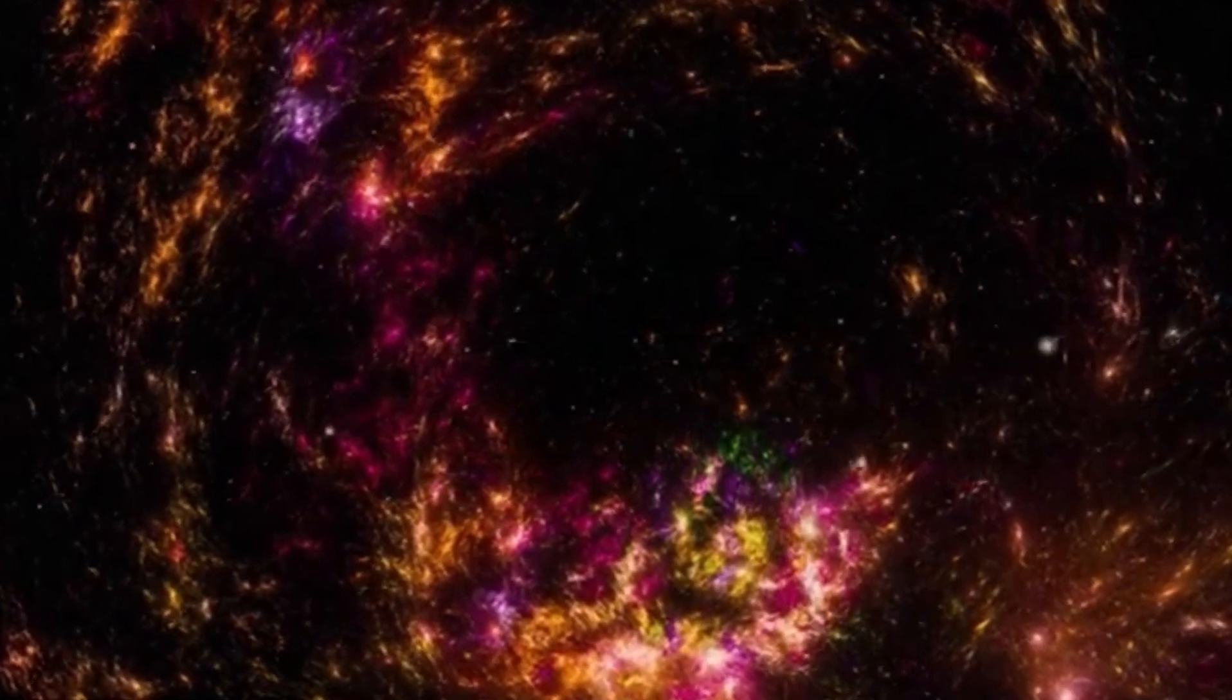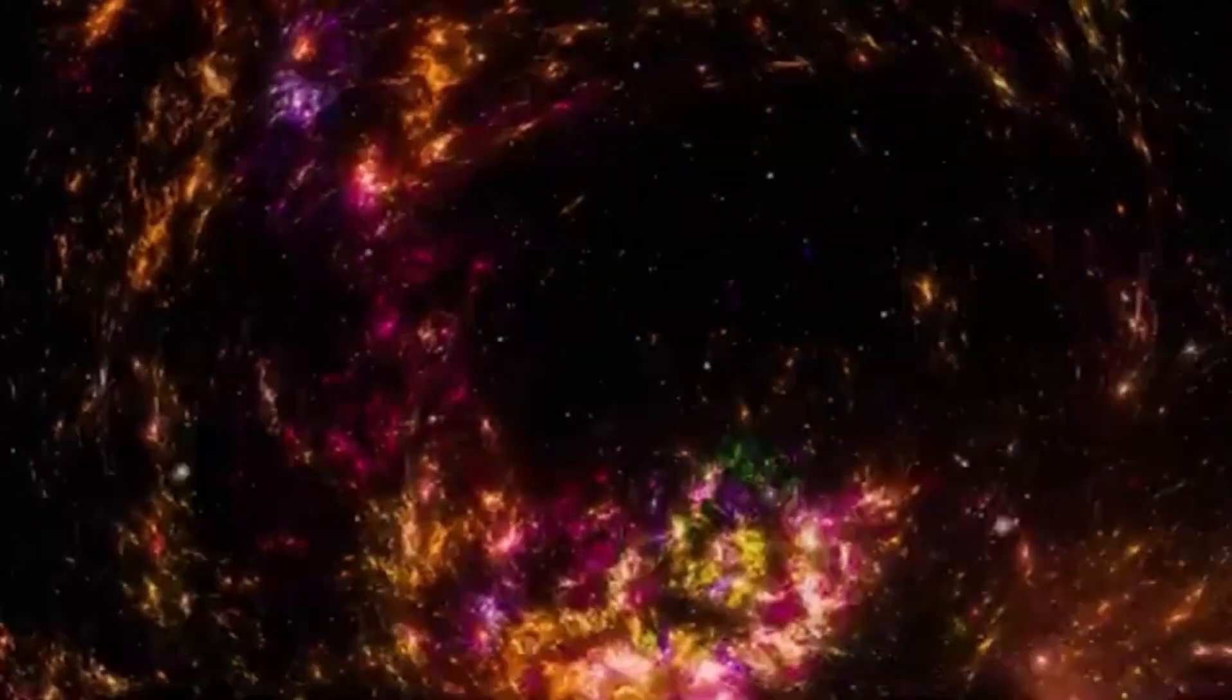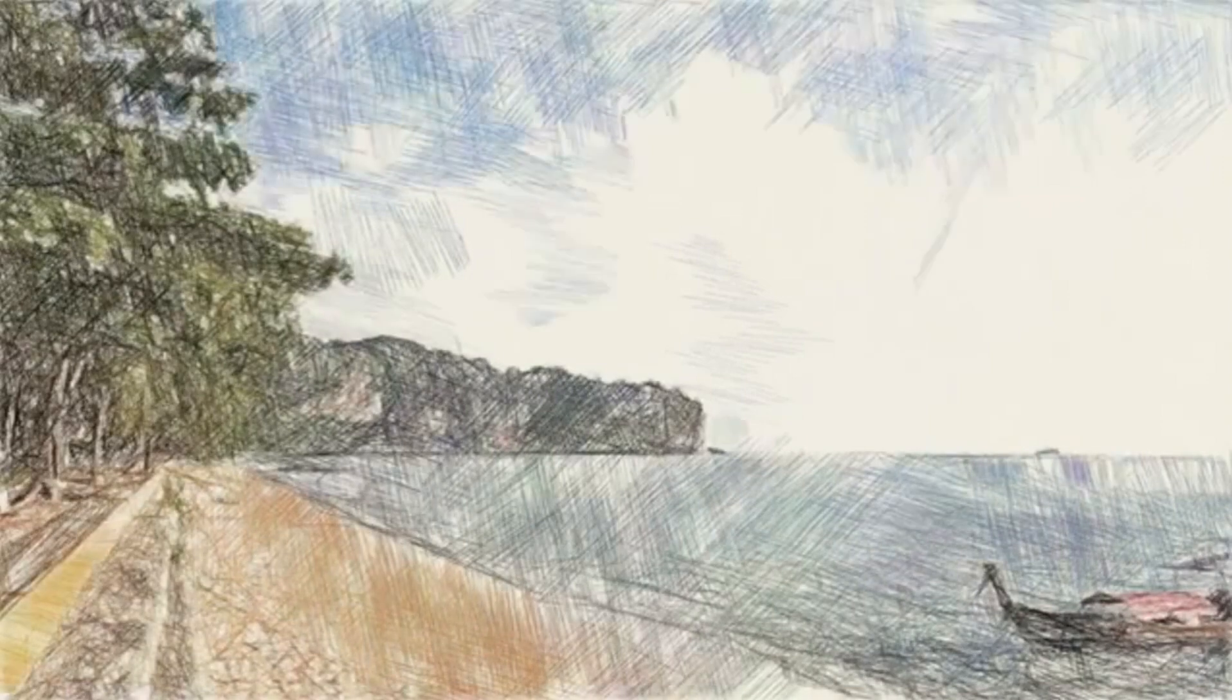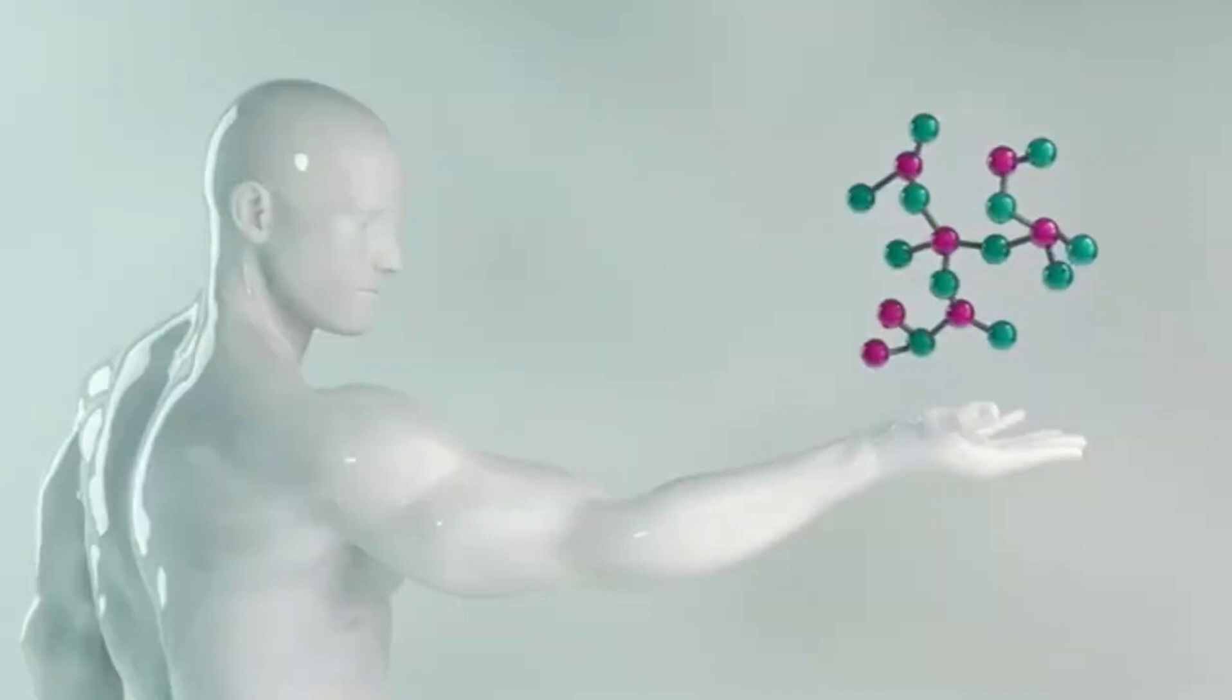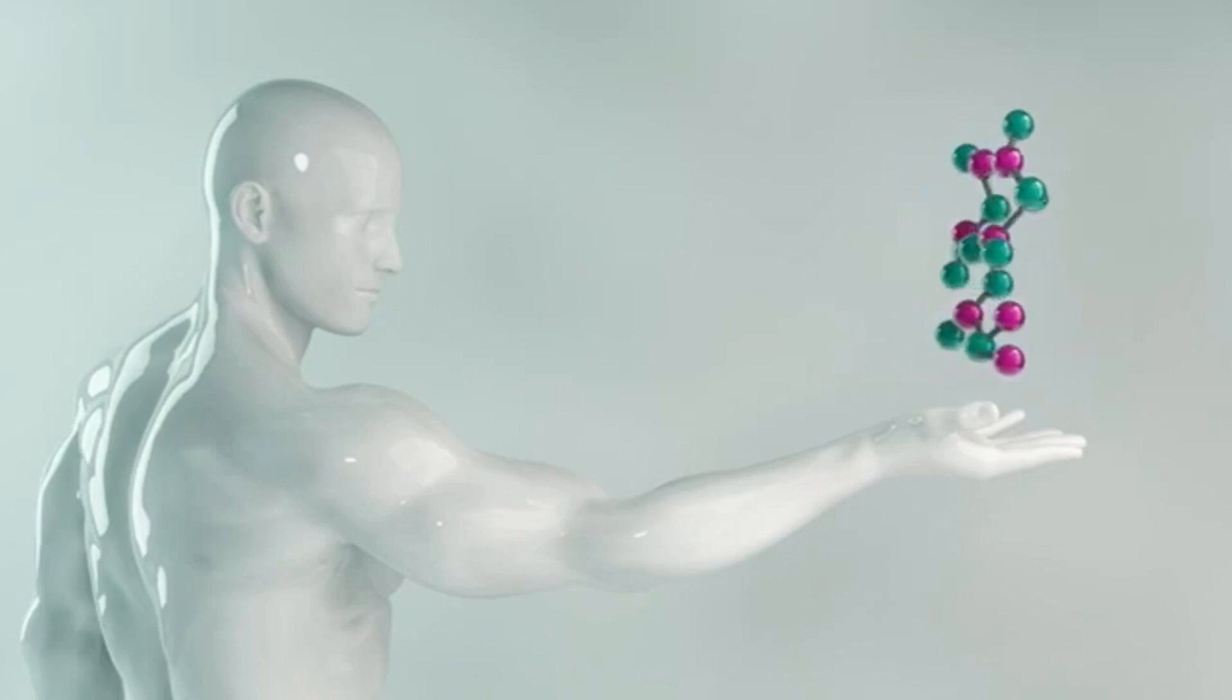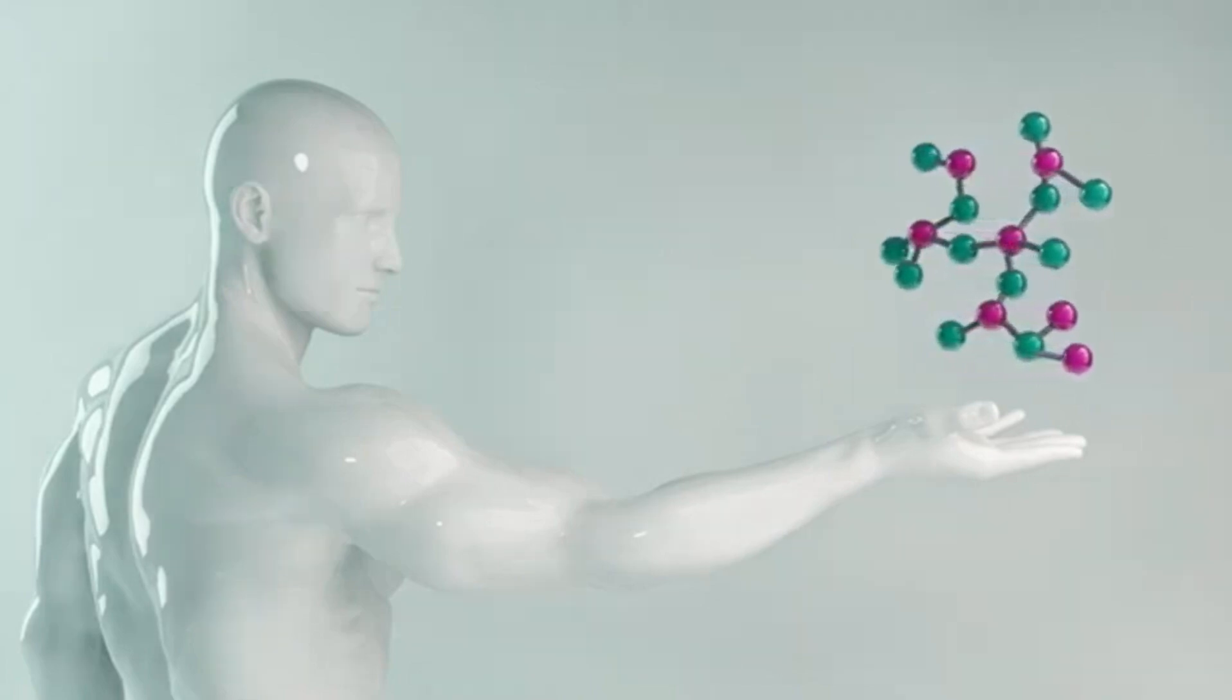The James Webb Space Telescope, or JWST, a groundbreaking instrument launched into orbit, is here to help us peer deeper into the unknown than ever before. This technological marvel, equipped with unprecedented power, works like a giant magnifying glass, allowing scientists to reveal the intricate and often hidden details of distant planets, stars, and galaxies in ways we never thought possible.